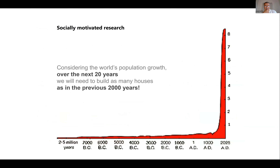I always like to show this graph on my presentations. It shows the growth of the human population, and what it's telling us is that over the next 20 years we have to build as many houses as we've built in the past 2000 years. So how can we solve a problem of this scale?